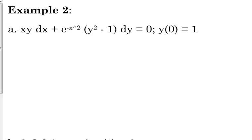Let's look at one with a particular solution. This one looks really nasty, but it's not that terrible. The equation is: xy dx plus e to the negative x squared times y squared minus 1, dy, is equal to 0. The initial condition is y(0) equals 1. They already have the dx and dy separated. We've got to move one of these to the other side — I'm going to move the xy dx to the right side, and the only way I can do that is by subtracting it.